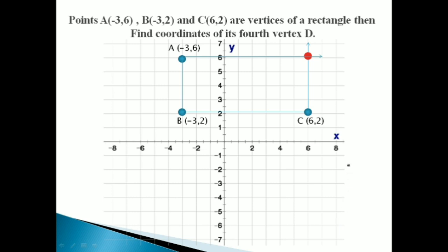तो यह fourth point D का coordinate ढूँढते हैं। If I am at origin, तो red point तक पहुँचने के लिए horizontally from origin to point 6 — which is 6 units right side — so plus 6। यहाँ से vertically 0 से फिर 6 तक — 6 units upwards — so plus 6। तो D point has coordinates (6, 6)।